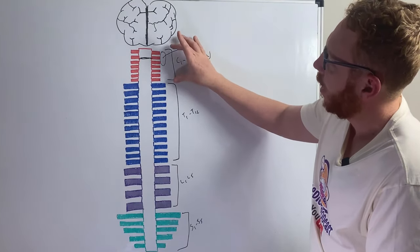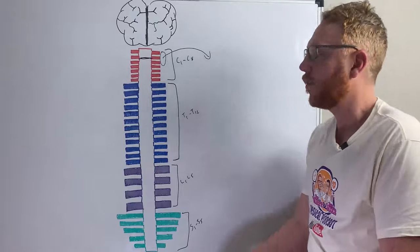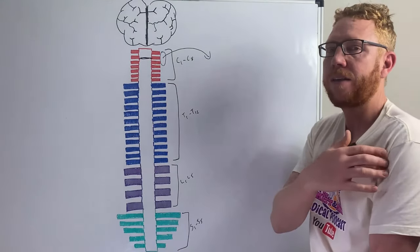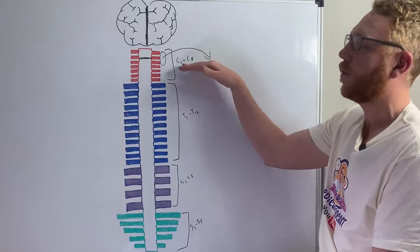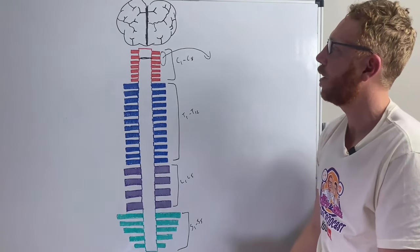By and large, an injury to the cervical region is going to impact everything below it. So it's going to impact the arms and the legs. So usually this is referred to as quadriplegia or tetraplegia.